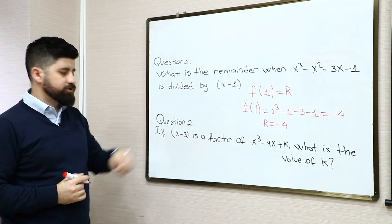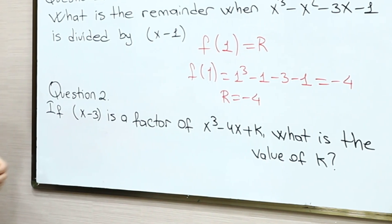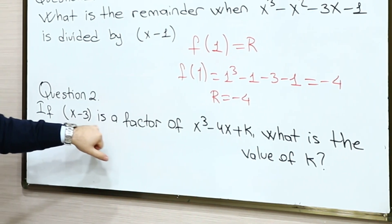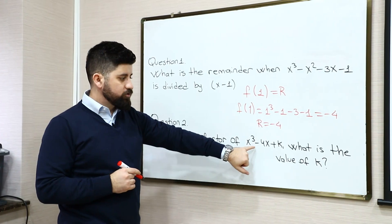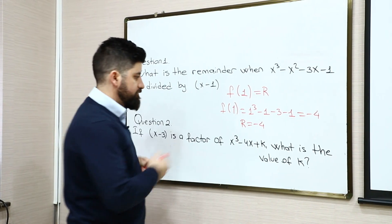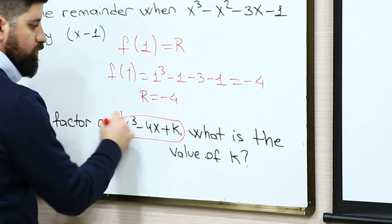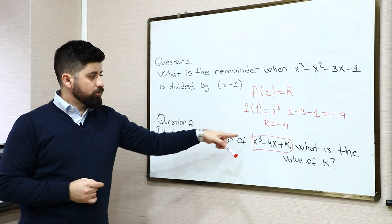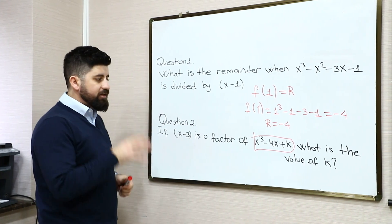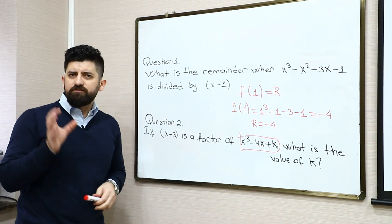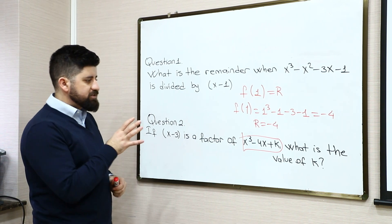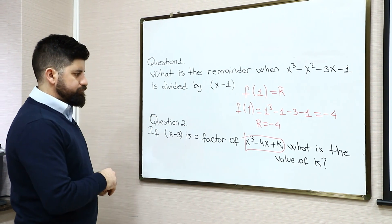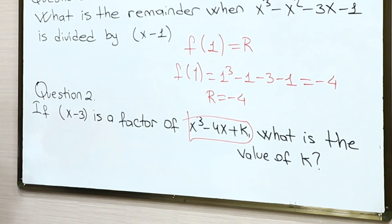Now let's look through question number 2. In question number 2, it says if x minus 3 is a factor of x³ minus 4x plus k, what is the value of k? So if x minus 3 is a factor of this polynomial, it means that the remainder is going to be equal to 0.